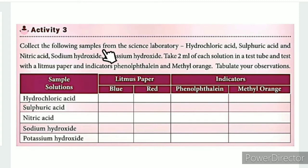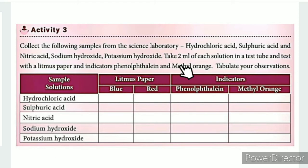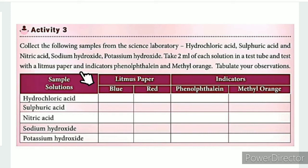Collect the following samples from the science laboratory: hydrochloric acid, sulfuric acid, nitric acid, sodium hydroxide, potassium hydroxide. Take 2 ml of each solution in a test tube and test with litmus paper and indicators phenolphthalein and methyl orange.